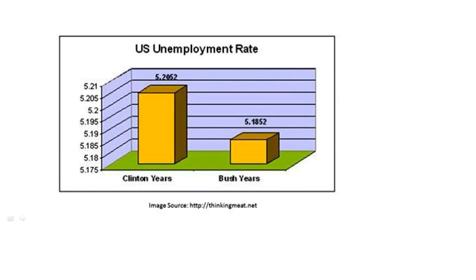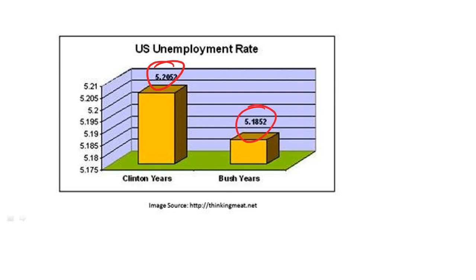The same thing appears with the US unemployment rate during the Clinton and Bush years. It looks like Clinton had a way higher unemployment rate, but in reality the numbers are really close — only 0.02 apart. The reason is that the graph doesn't start at zero; it starts at 5.175, which zooms in and makes a small change look really big.